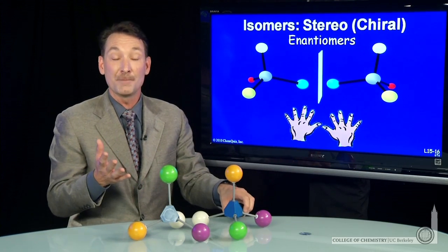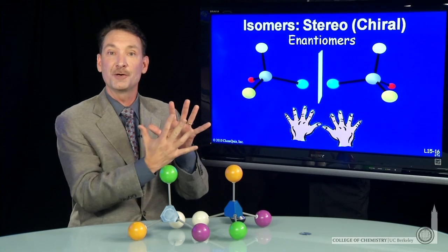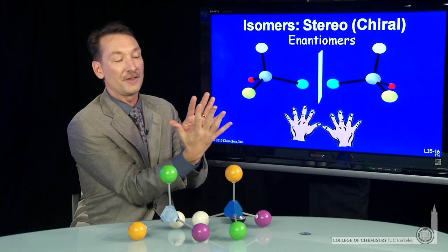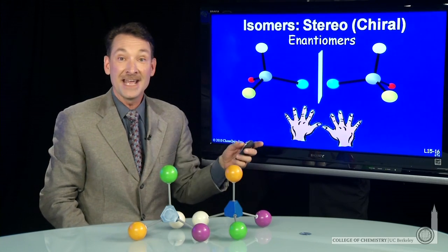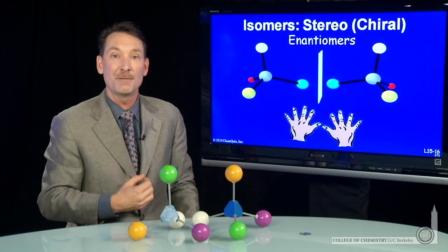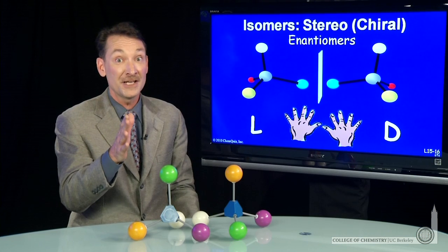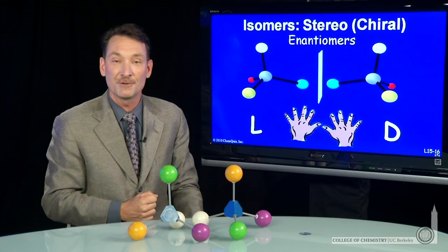Chirality is the same property your hands have. Your hands are mirror images of each other, but they're not superimposable — I can't make my thumb line up perfectly and get all the fingers to line up. So my hands have this property; there's a handedness to these molecules. We give these molecules designations L and D to distinguish one isomer from the other. They're very difficult to distinguish, and it often takes a sophisticated spectroscopy experiment to tell them apart.